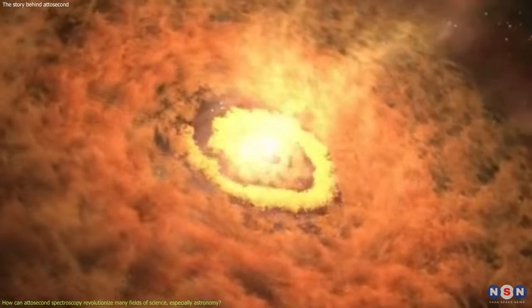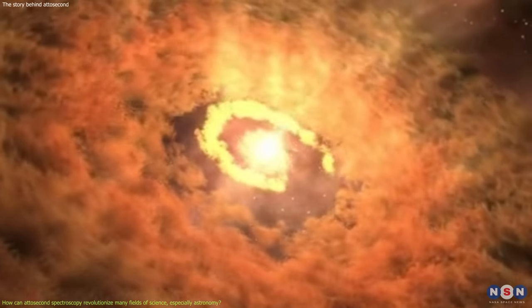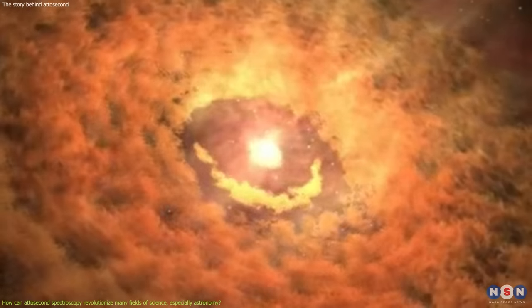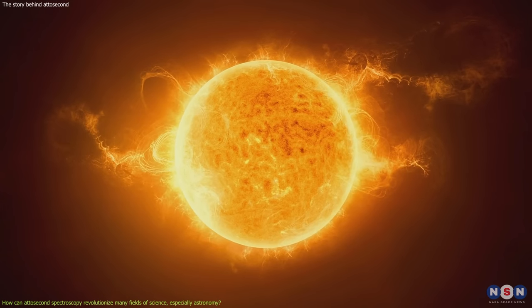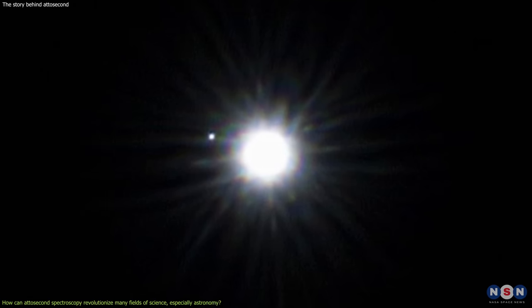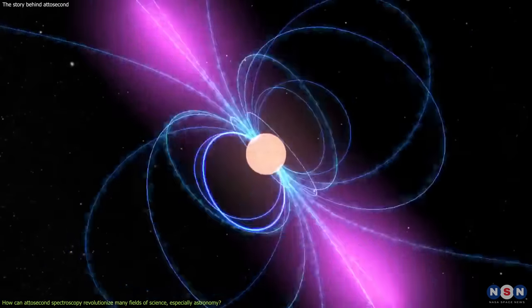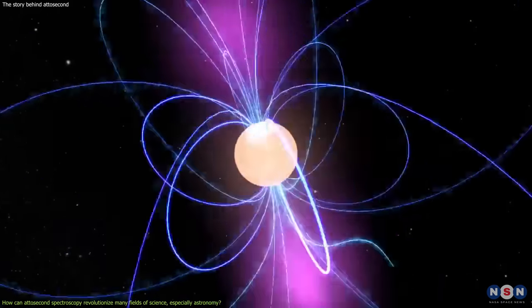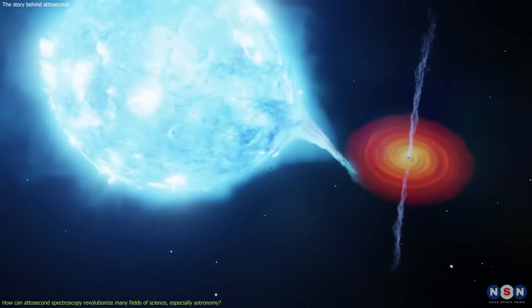We can also study how stars change over time due to different stages of their life cycles, such as main sequence stars like our sun, red giants like Betelgeuse, white dwarfs like Sirius B, neutron stars like pulsars, or black holes like Cygnus X1.